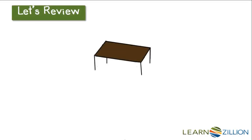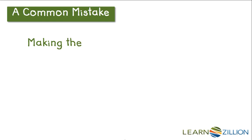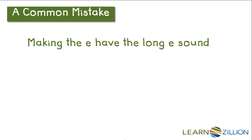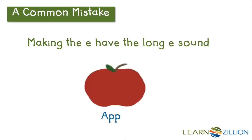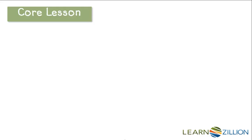Let's review. Consonant LE syllables come at the end of words. The LE makes the UL sound, like in table. A common mistake when reading consonant LE words is making the E have the long E sound. So, for example, reading this word as apple-E instead of as apple.